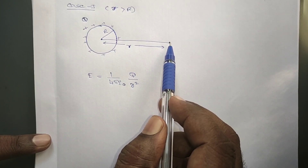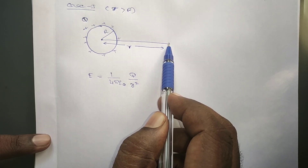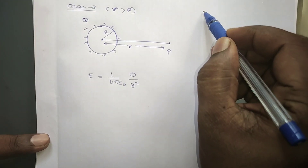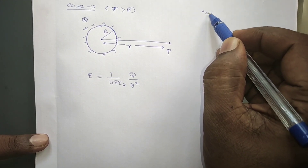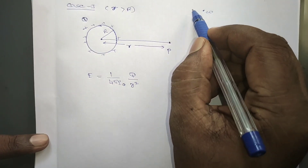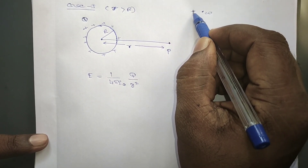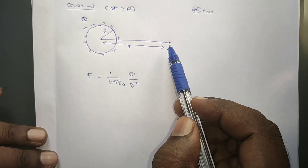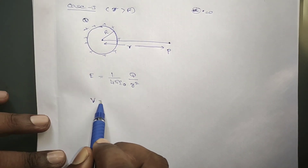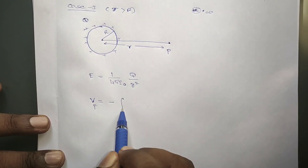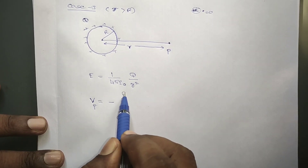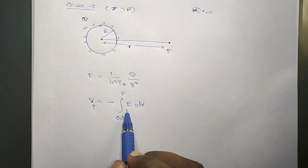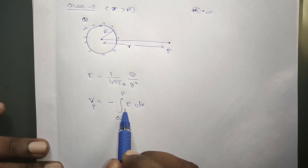The electric potential at this point is the amount of work done to bring a unit positive charge from infinity to this point. We consider bringing a 1 coulomb charge from infinity to point P. The formula is: V = −∫(from infinity to P) E · dr. Since the electric field and displacement are in opposite directions, a negative sign is included.